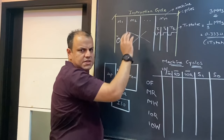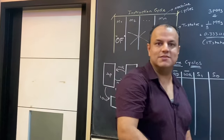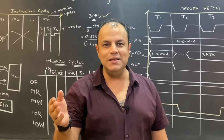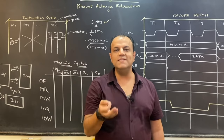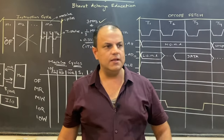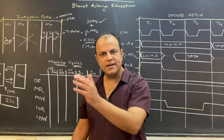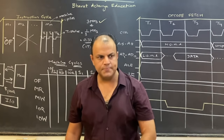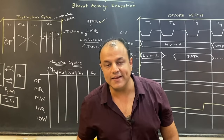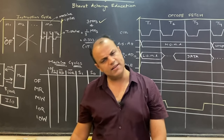एक machine cycle के अंदर अलग-अलग T states होते हैं। Processor के लिए time seconds, milliseconds, minutes या hours में नहीं गिना जाता — processor के लिए time clock pulses में गिना जाता है। Processor को एक instruction करने में कितने clock pulses लगते हैं, हम वो बात करते हैं। Processor का time, time से नहीं, clock pulses से गिना जाता है।